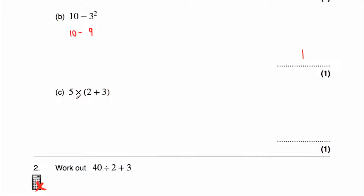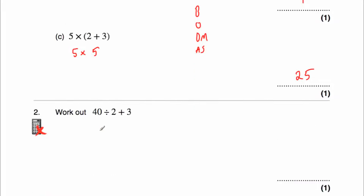Question c says: 5 multiplied by (2 plus 3). Remember our order is brackets, orders, divisions and multiplications, additions and subtractions. We do have brackets, so we need to do 2 plus 3 first, which is 5. Then we still have 5 multiplied by in front, so we get 5 multiplied by 5, and 5 times 5 is 25. So our answer is 25.